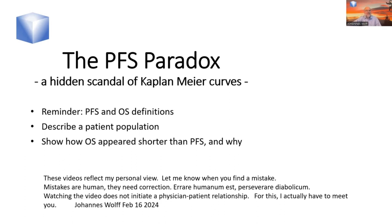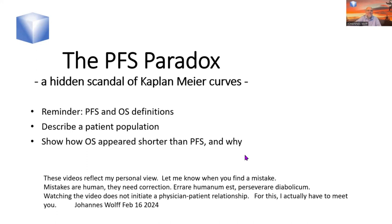The PFS paradox can be considered a hidden scandal of Kaplan-Meier curves. In this very short video, I will remind you what the definitions of progression-free survival and overall survival are, briefly describe a patient population and a clinical trial situation as it did happen, and show you how OS appeared shorter than PFS and how that could happen. Overall survival is our gold standard — by definition it starts with either initiating drug treatment or randomization, and it ends with the patient passing away.